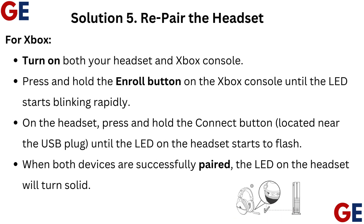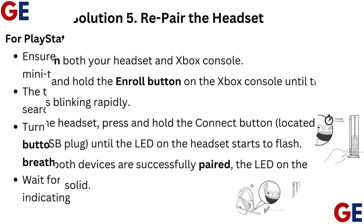Solution 5: Re-pair the headset. For Xbox, turn on both your headset and Xbox console. Press and hold the enroll button on the Xbox console until the LED starts blinking rapidly. On the headset, press and hold the connect button, located near the USB plug, until the LED on the headset starts to flash. When both devices are successfully paired, the LED on the headset will turn solid.